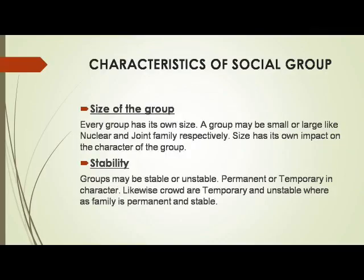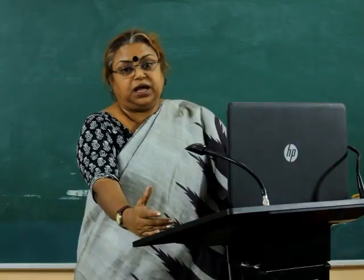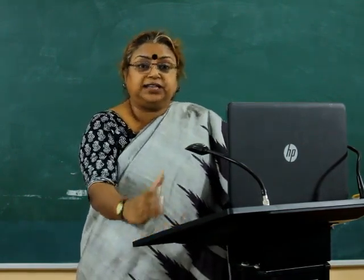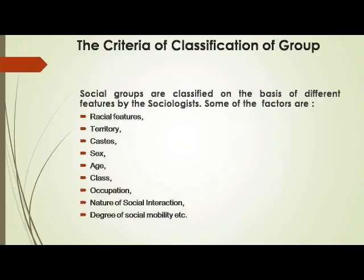Stability — a group may be stable or unstable, permanent or temporary. For example, a crowd is temporary and unstable, whereas a family is permanent and stable. Now moving towards the classification of social group — before going to classification we should know the criteria. There are various factors for classifying groups such as racial features, territory, caste, age, occupation, nature of social interaction, and degree of social morality.